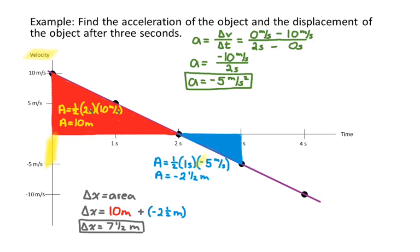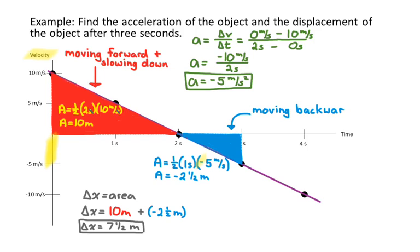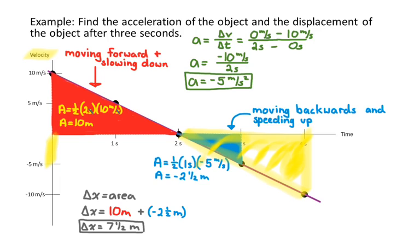The positive red area represents the object moving forward while slowing down — going from a high velocity of ten meters per second toward zero. During the negative blue area the object is moving backwards and, since the velocity's magnitude is getting larger, it's speeding up. At two seconds the object comes to a stop, then turns around. If we had found the displacement at four seconds, we probably would have gotten negative ten meters, meaning the object had returned to its original position.